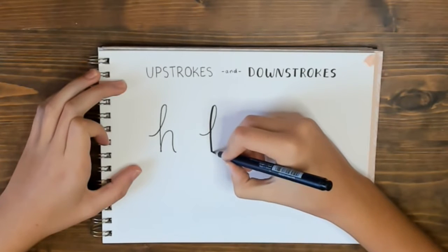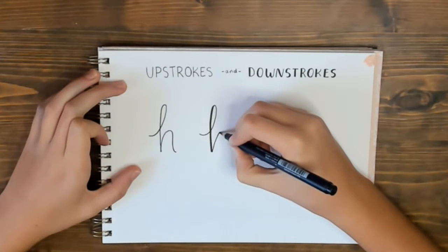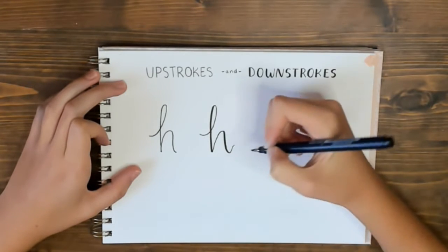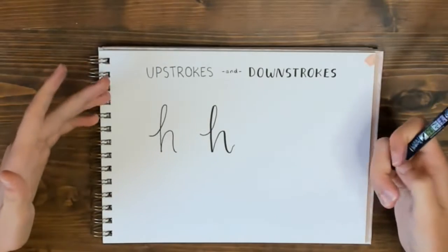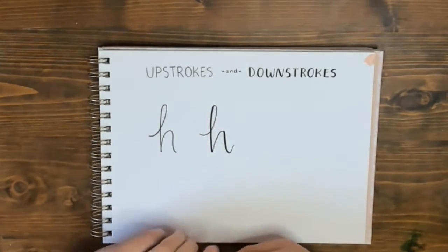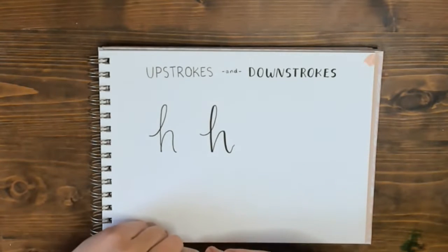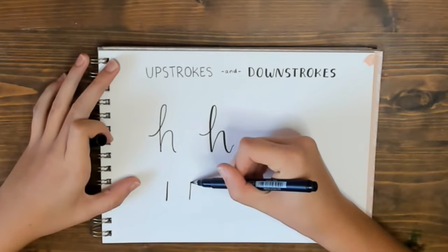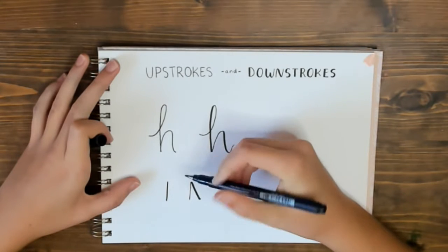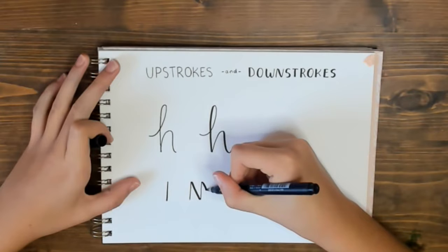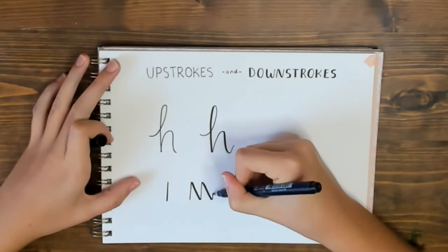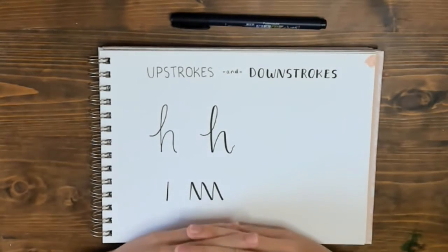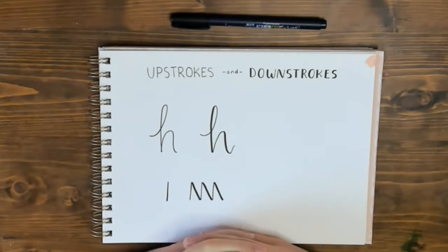Then we're going to do an upstroke — no pressure — and then a downstroke with pressure. To get your feel for doing thick downstrokes, I would recommend just taking your sketchbook and doing some upstrokes and then a downstroke. Upstroke, downstroke. And then you can just practice doing thick downstrokes with regular letters that you would write.